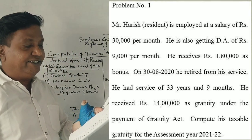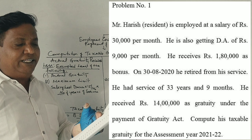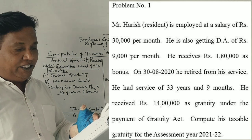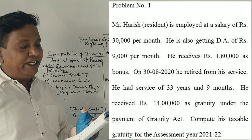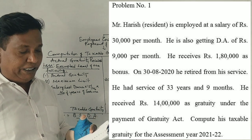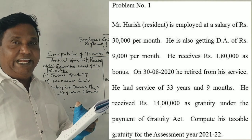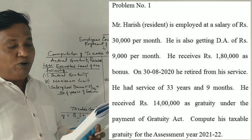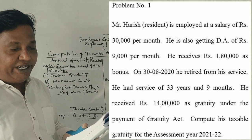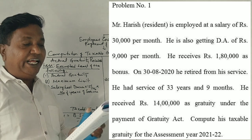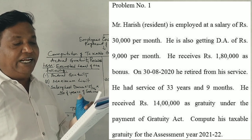Mr. Harish, a resident, is employed at a salary of 30,000 rupees per month. He is also getting DA of 9,000 rupees per month. He received 1,80,000 as a bonus.